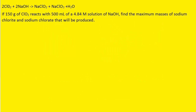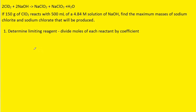If you haven't done so yet, pause the video and try to answer the question first before listening on. Our first step in the question is to determine the limiting reagent. To find the limiting reagent, what we do is divide the moles of each reactant by the coefficient in the balanced reaction. The coefficient would be the numbers in front of the reactants in the chemical equation.